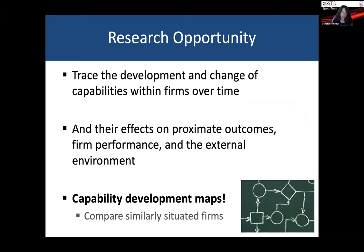Here's a research opportunity: we can trace the development and change of capabilities within firms over time. There are some case studies that have done this, but what I'd love to see are what I call capability development maps — taking similarly situated firms, tracing the development and change of their capabilities and their effects on proximate outcomes, performance of the firm, and the external environment. I think we do this very rarely, and I'd love to see more of it both qualitatively and quantitatively. It would be enlightening — this is something we really haven't done.